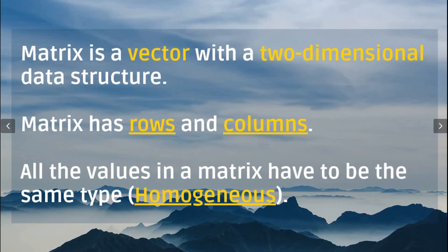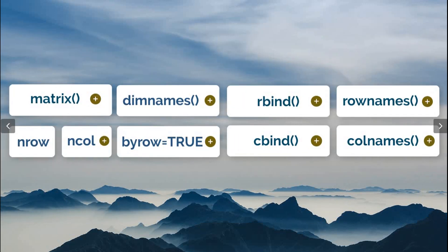Now let's go to matrices. A matrix is a vector with two-dimensional data — it has rows and columns, and all values in the matrix must be the same type, i.e., a homogeneous data type. These are the functions and arguments needed to create, name, or modify a matrix, and we will use all of them in this video.